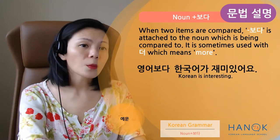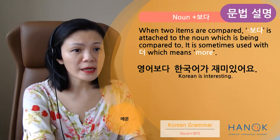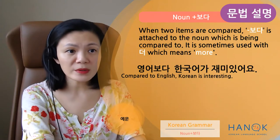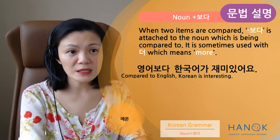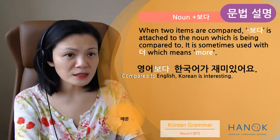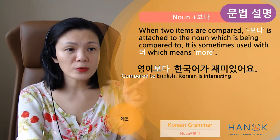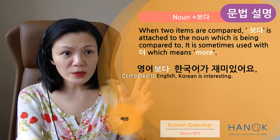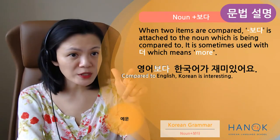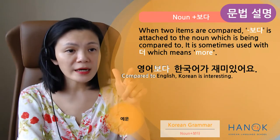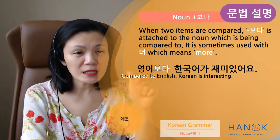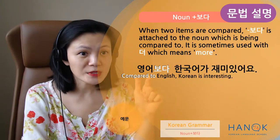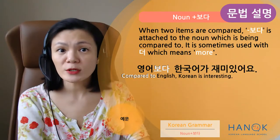예를 들면, 영어 보다 한국어가 재미있어요. Here we're comparing to English — 한국어가 재미있어요. So 보다 is attached when comparing. Compared to English. 괜찮죠? As you can see, the sequence is different for Korean and English. In Korean, we say 영어 보다, but in English, it's 'compared to.' 그쵸? So the sequence is different — 이거 주의하세요, just take note of this.